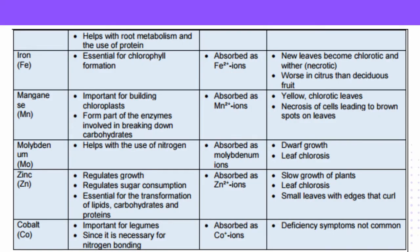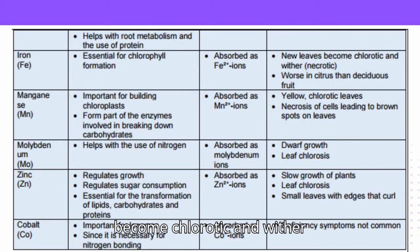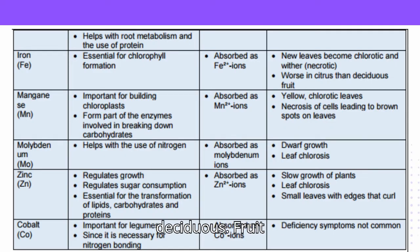Iron (Fe): Essential for chlorophyll formation. Absorbed as Fe²⁺ ions. Deficiency symptoms: new leaves become chlorotic and wither (necrotic); worse in citrus than deciduous fruit.